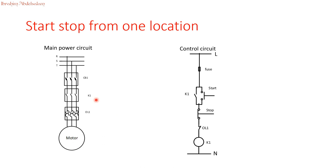We use the overload signal as feedback so we can interrupt and turn off the contactor. We have one start button and one stop button. Here is the fuse we use to protect our control circuit. Once start is pressed, the current will flow through the switch to the stop button, through the overload contact, to the contactor coil. The contactor coil will be energized, and the contacts will change position from open to closed, so current flows to the motor — the motor is now running.